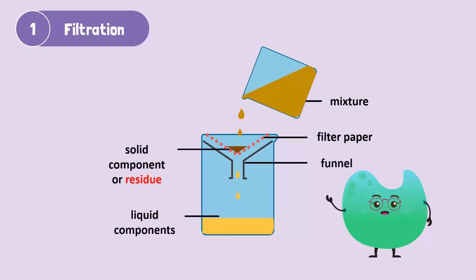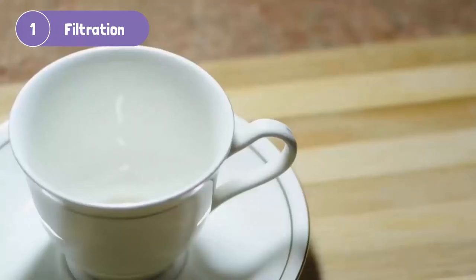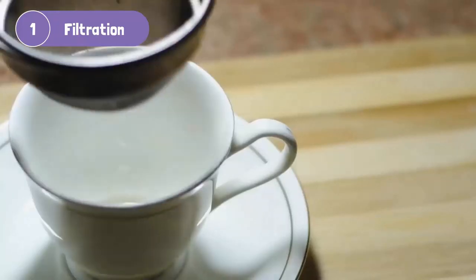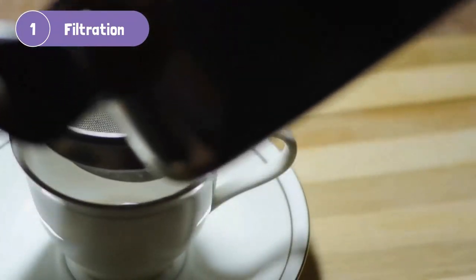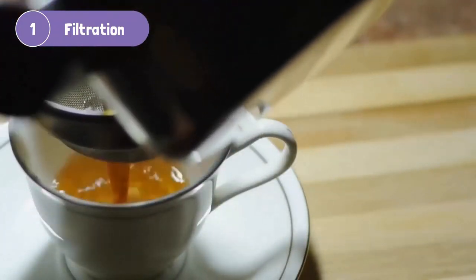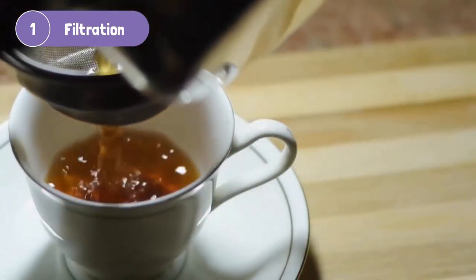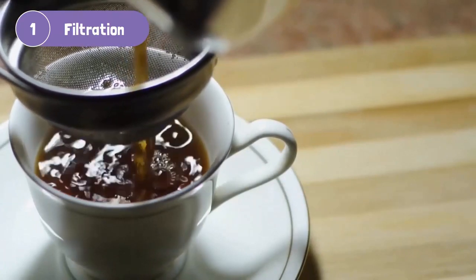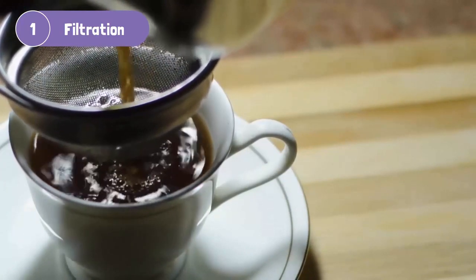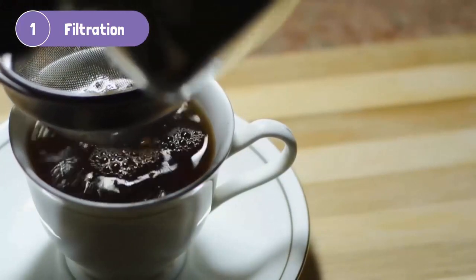As an example, have you ever seen tea being made? We want to make sure we don't drink the tea leaves with our tea. So we pour it through a strainer. The strainer acts as our filter — it holds back the tea leaves.